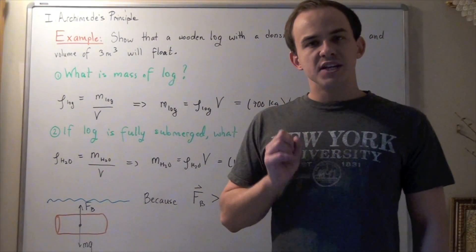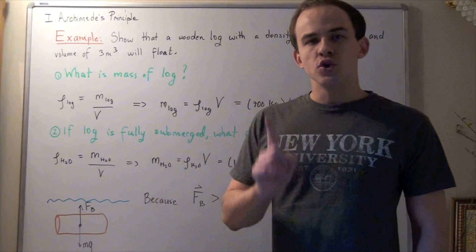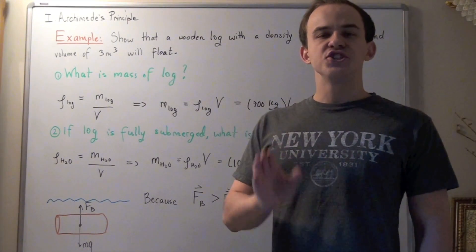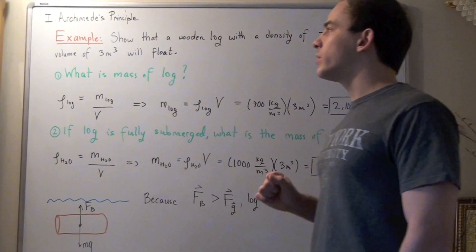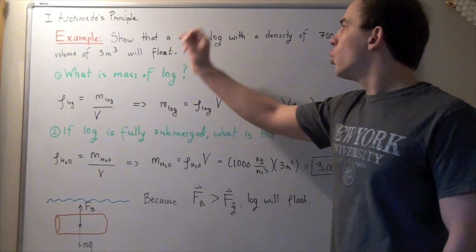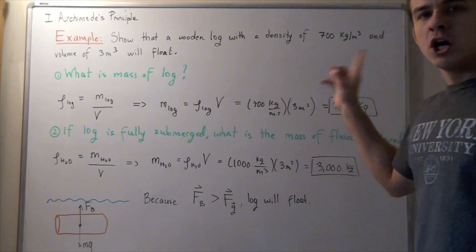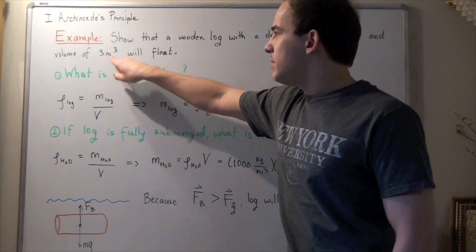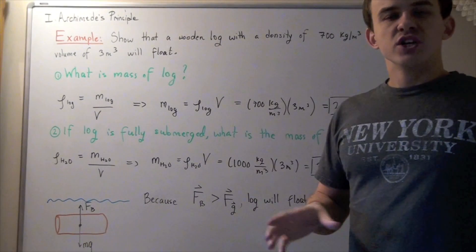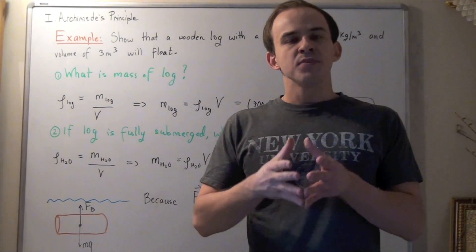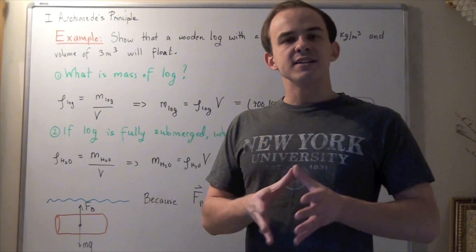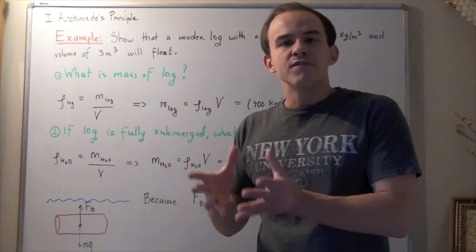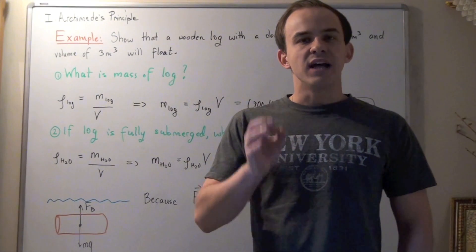So now that we know what Archimedes' Principle is, let's try to use it to answer the first question: why do certain objects float while others sink? Let's show that a wooden log with a density of 700 kilograms per meter cubed and a volume of 3 meters cubed will float. We basically want to use Archimedes' Principle and the buoyancy force to answer this question.